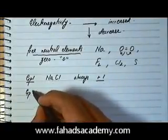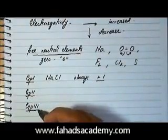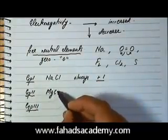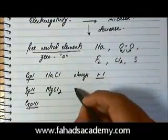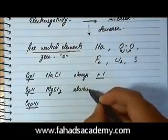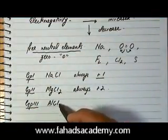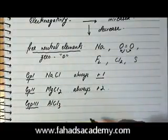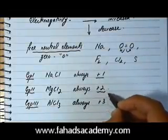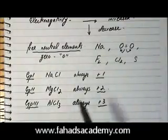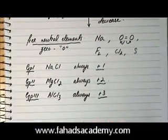In a similar manner, group 2 elements — for example in MgCl₂ — always have a charge of +2 when bonding, giving an oxidation state of +2. Group 3 elements, such as in AlCl₃, always have a minimum oxidation state of +3. So group 1 is +1, group 2 is +2, and group 3 is +3 — their oxidation states correspond to the group they belong to.